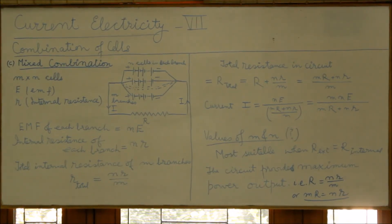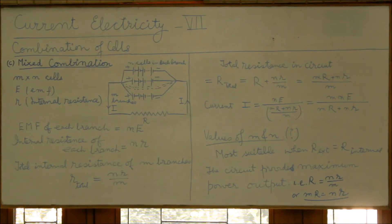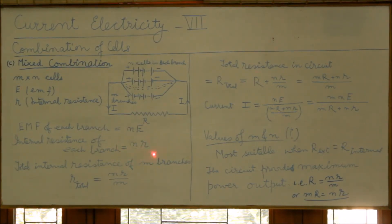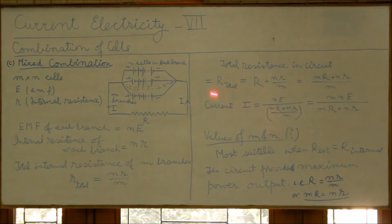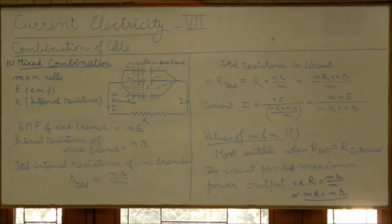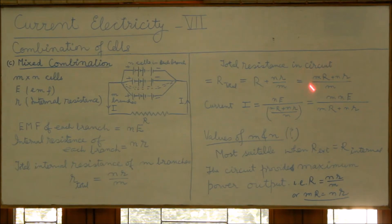The combination drives a current i through an external resistance R. The EMF of each branch is n×e (since there are n cells each of EMF e), and each branch has an internal resistance n×r. The total EMF of the combination is ne, while the total internal resistance is the parallel combination of m branches each of resistance nr, giving nr/m. The total resistance in the circuit is R + nr/m, and the current is mne/(mR + nr).